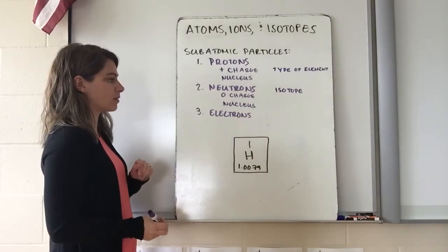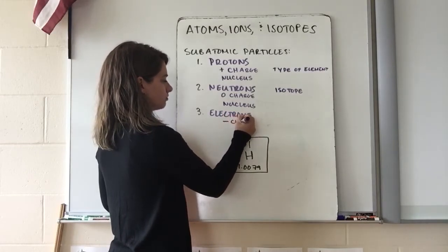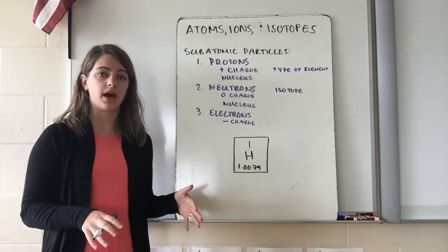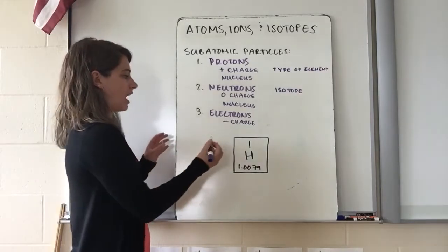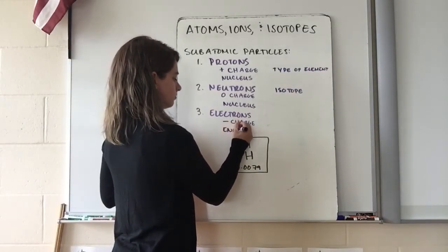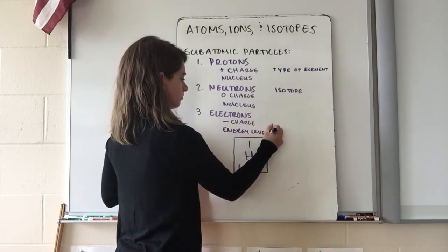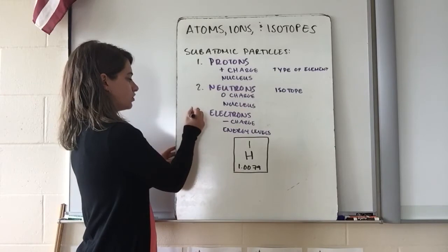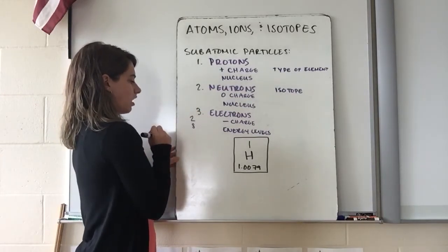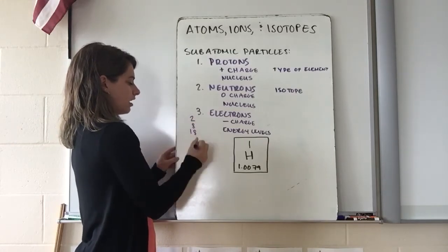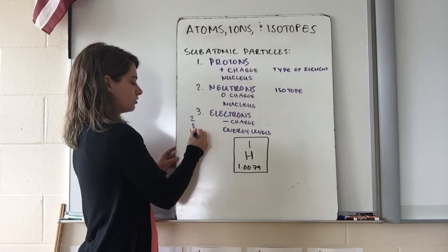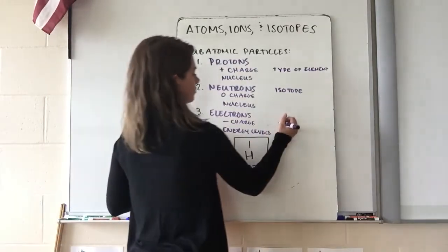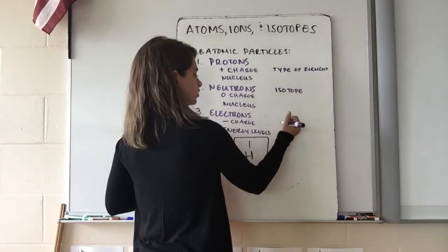Our third subatomic particle is our electrons, and electrons have a negative charge. Their location has changed over the course of the atomic models, but based on Bohr's atomic model they live in energy levels. Different energy levels can contain different amounts of electrons: our first energy level can contain two, our second eight, our third 18, and our last 32. Electrons are responsible for determining whether or not it is an ion, or the charge of the atom.